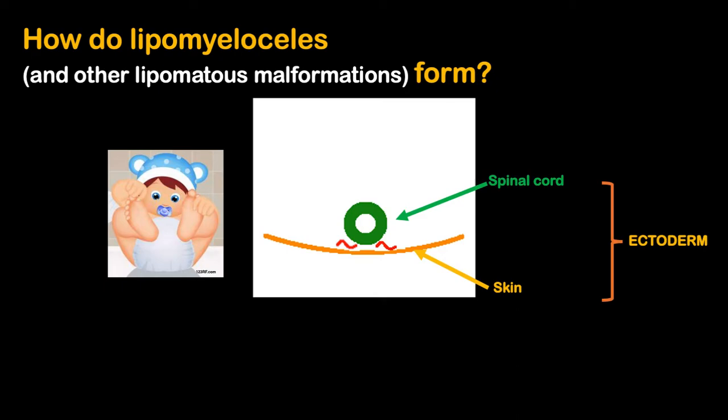Once upon a time, the cord was a simple tube called the neural tube.